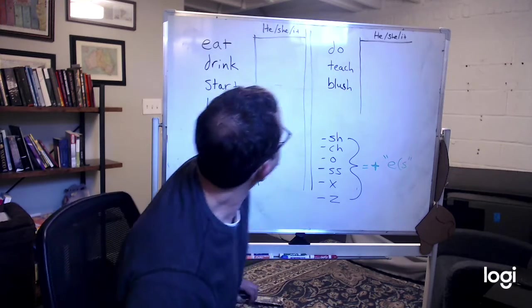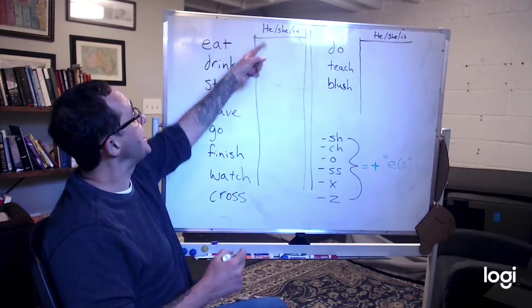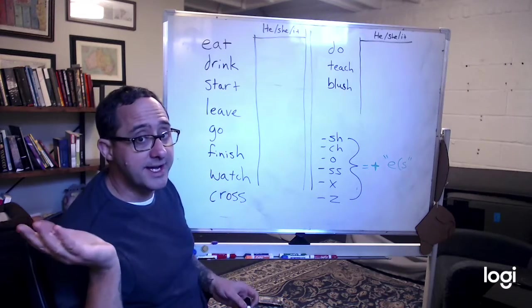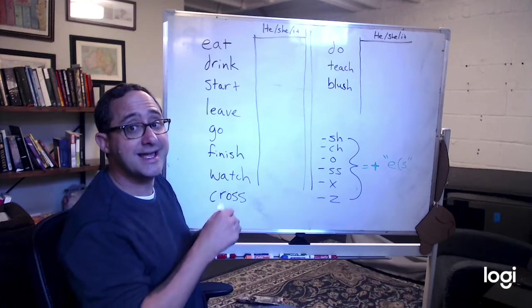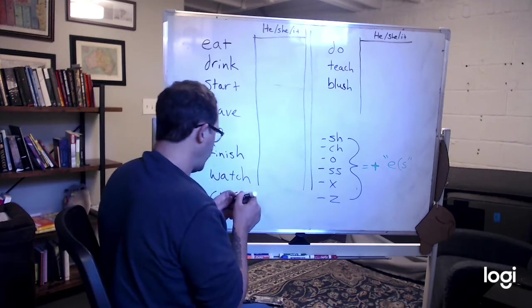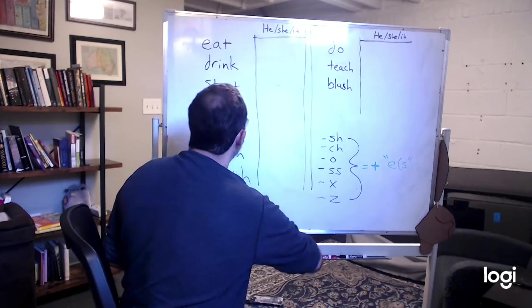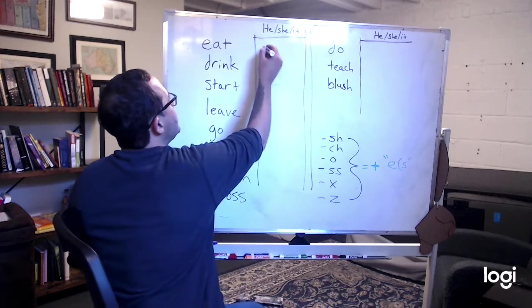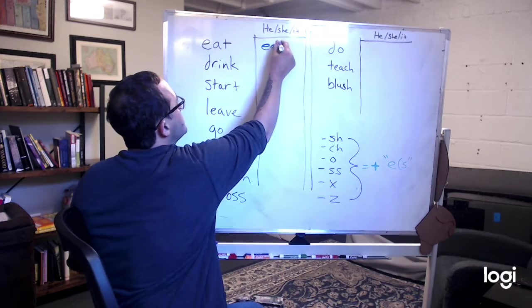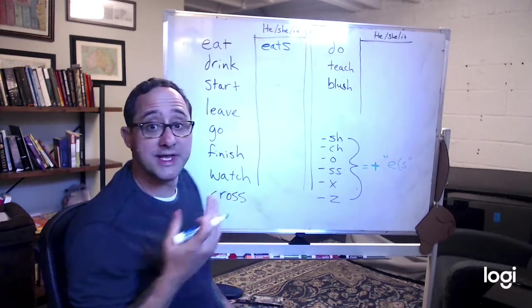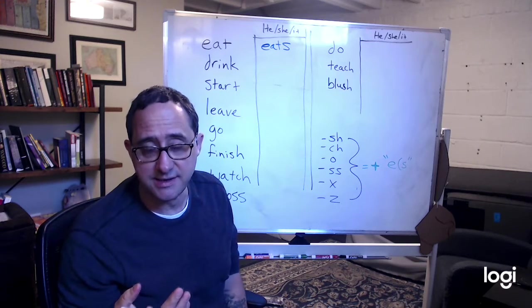So he, she, it, eat, what would it be? Think about it for a second. E S. Let me use another color. E S. And we really say it. Eats. Eats.